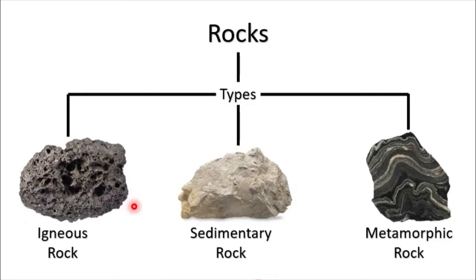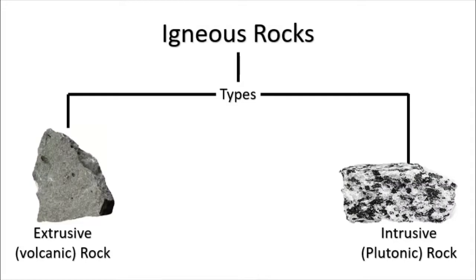This is our second lesson in earth science: Rocks. So igneous rock — there are two types of an igneous rock. The first type includes most of the rocks that we can find on the surface of the planet. This is an extrusive rock, or sometimes we call it volcanic rock.